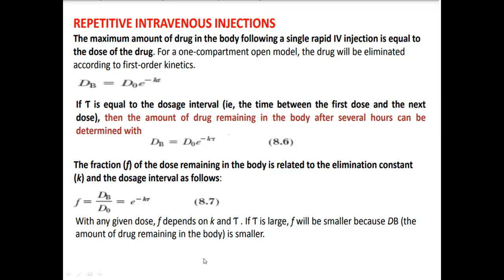If lambda is large, the fraction of dose F will be smaller, because the amount of drug remaining in the body, DB, is smaller. Whenever lambda is large, automatically the fraction of dose will be smaller.